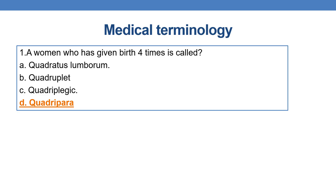Coming to the first question: a woman who has given birth four times is called a quadripara. Quadripara indicates a woman who has given birth four times.